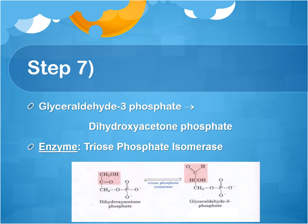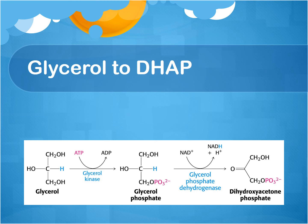Glyceraldehyde 3-phosphate with the enzyme triosephosphate isomerase becomes dihydroxyacetone phosphate. In addition to obtaining dihydroxyacetone phosphate by synthesizing it from pyruvate, glycerol may be used from triglyceride hydrolysis. Glycerol is phosphorylated by glycerol kinase using ATP to form glycerol phosphate, which is then oxidized by glycerol phosphate dehydrogenase — removing two hydrogens and converting NAD+ to NADH — while dihydroxyacetone phosphate is formed.